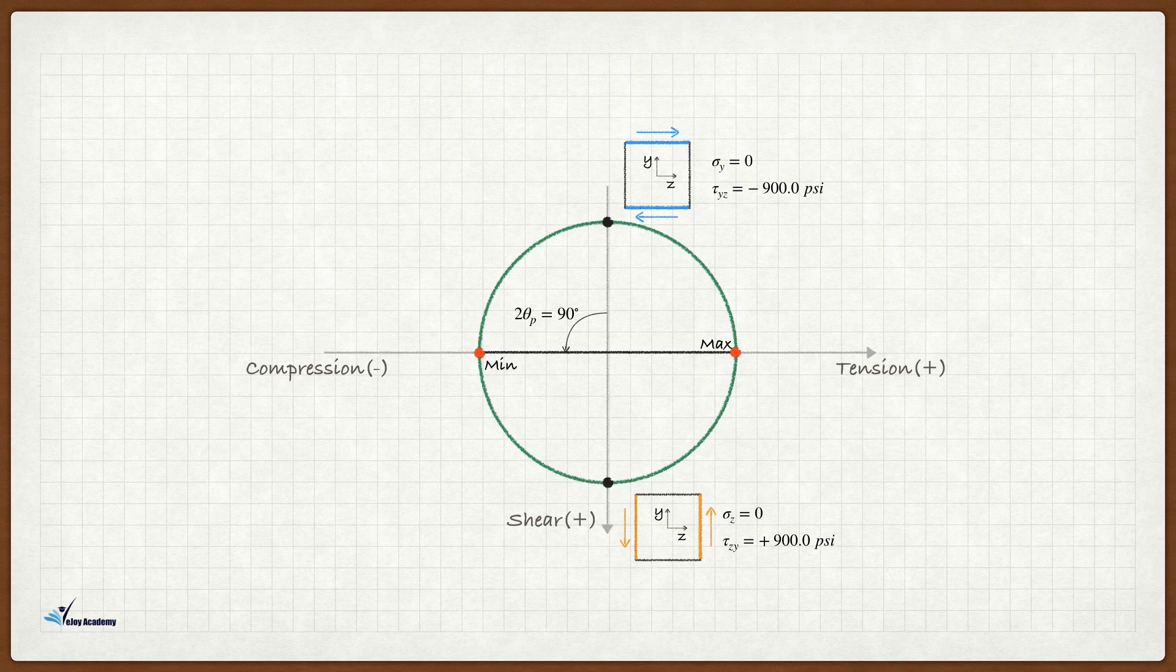According to the Mohr circle convention, the magnitude of this angle is twice the rotation on the actual stress block, but the direction of this rotation is the same on both the Mohr circle and the stress block.